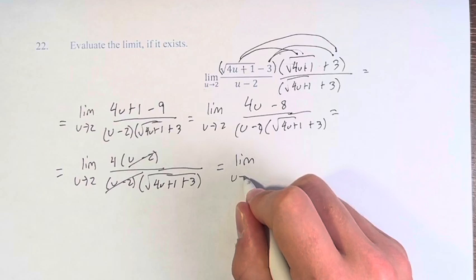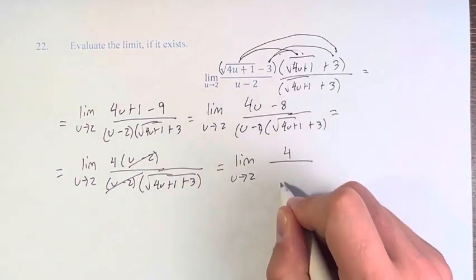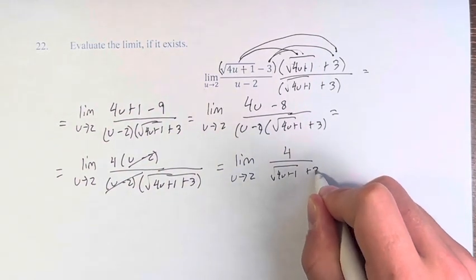We're left with the limit as u approaches 2: 4 over the square root of 4u plus 1 plus 3.